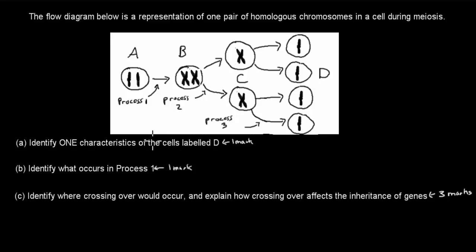Welcome to one of the past HSC exam question videos. In this video, we're going to cover this exam question, which comes from the chromosome and inheritance chapter of the Blueprint of Life module. The question is: the flow diagram below is a representation of one pair of homologous chromosomes in a cell during meiosis.